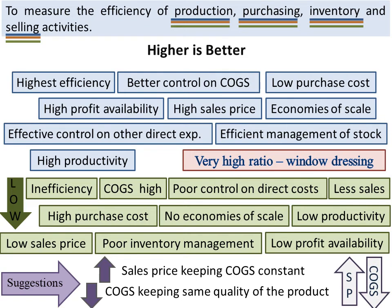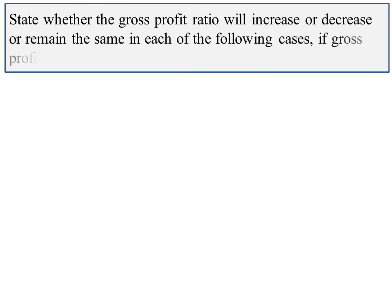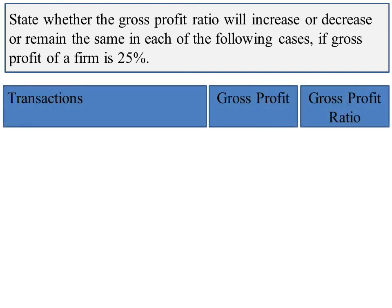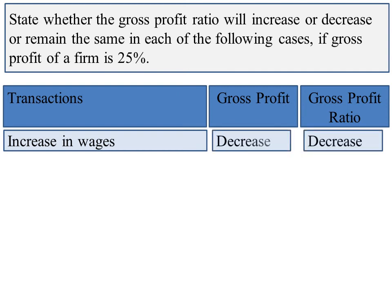Let us see what effect a few transactions will have on the existing gross profit with one question. The question is: state whether the gross profit ratio will increase, decrease, or remain the same in each of the following cases, if the gross profit of a firm is 25 percent. First: increase in wages. Wages are part of cost of goods sold and will increase, resulting in a decrease in gross profit.